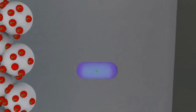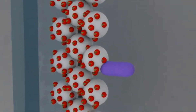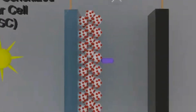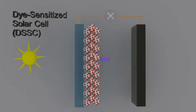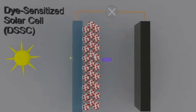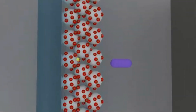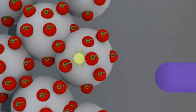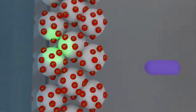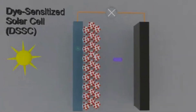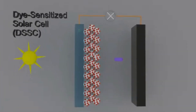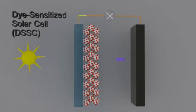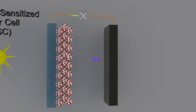Sunlight passes through a transparent electrode and is absorbed by the dye molecules attached to a titanium dioxide layer. This light energy excites electrons within the dye, moving them to a higher energy state.